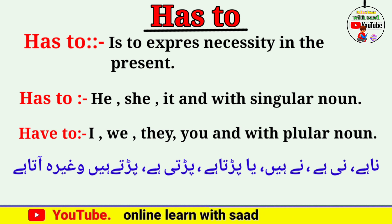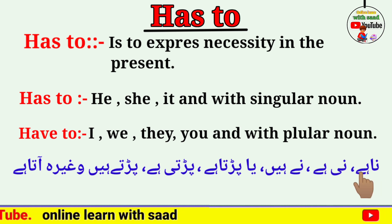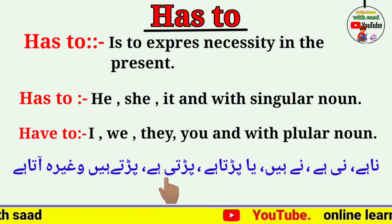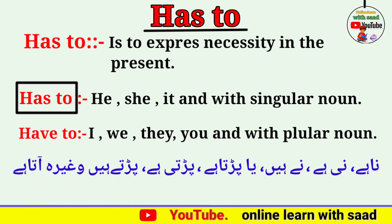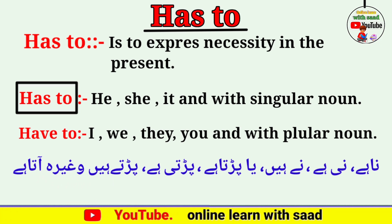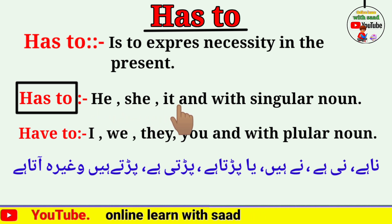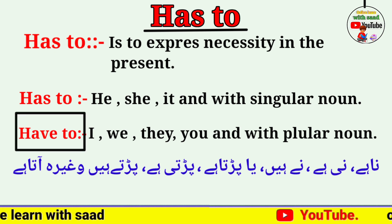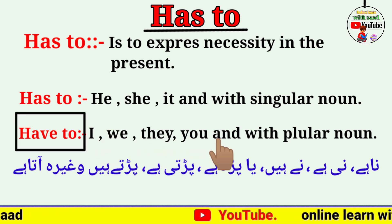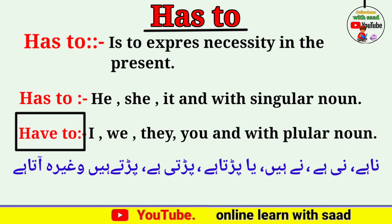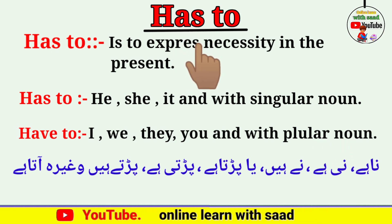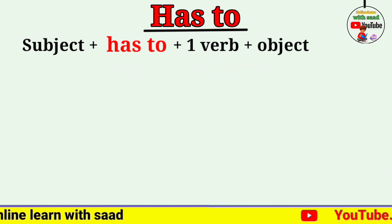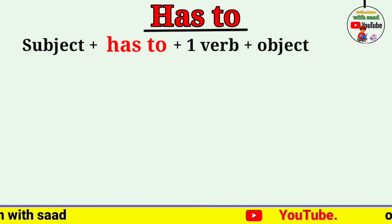اردو جملوں کے آخر میں 'نا ہے، نہیں ہے، نے ہے، پڑتا ہے، پڑتی ہیں، پڑتے ہیں' وغیرہ آتا ہے۔ 'Has to' کا use صرف he, she, it اور singular noun کے ساتھ ہوتا ہے۔ ان کا structure ہے: Subject + has to + first form of verb + object۔